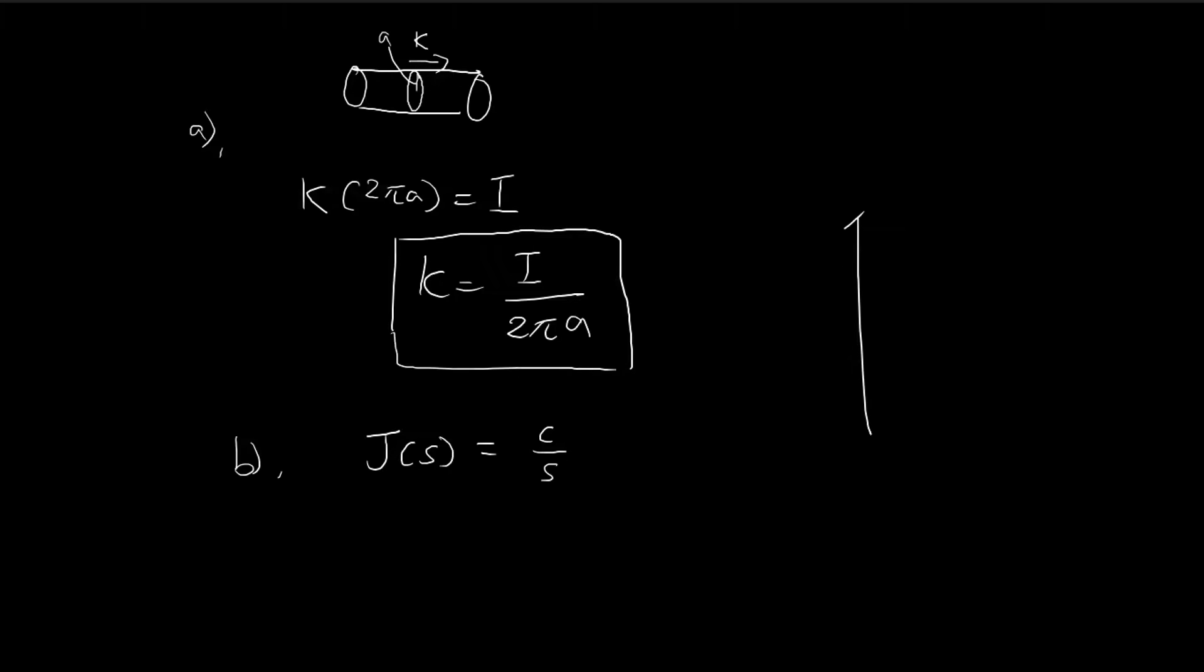so you can imagine the cylinder being in these Cartesian coordinates. So this is x, y, and z. And this over here would be S, and there would be a theta. So we're going to use cylindrical coordinates. And then we have current that's flowing in this direction. And then the total current is going to be I.